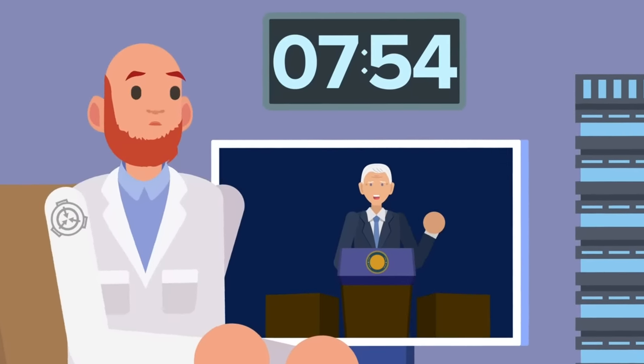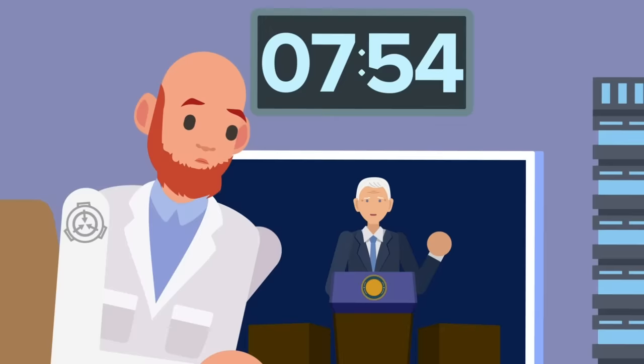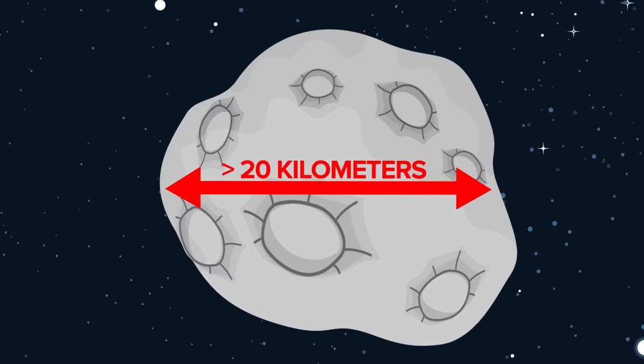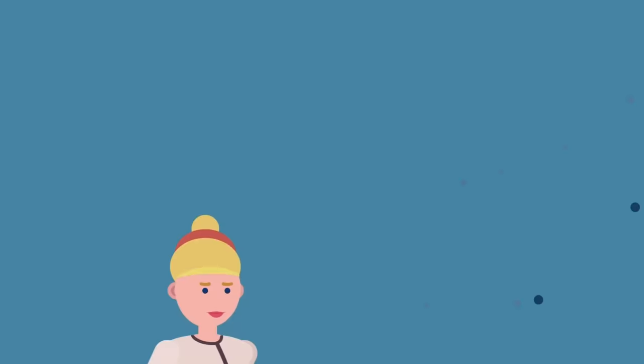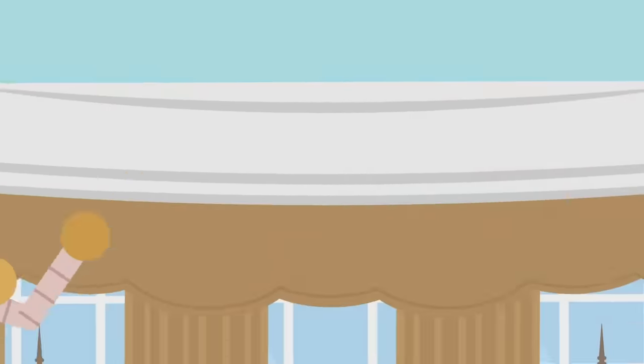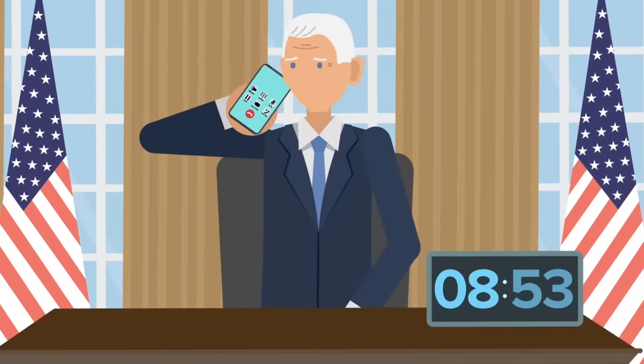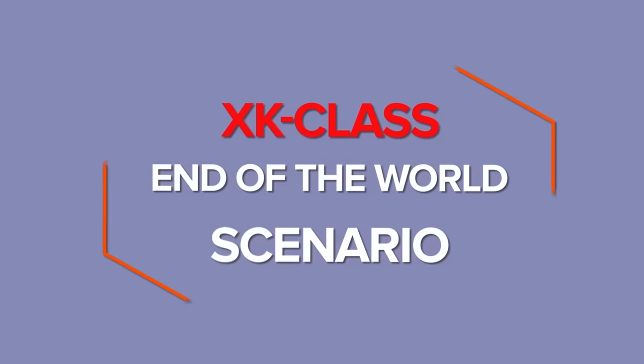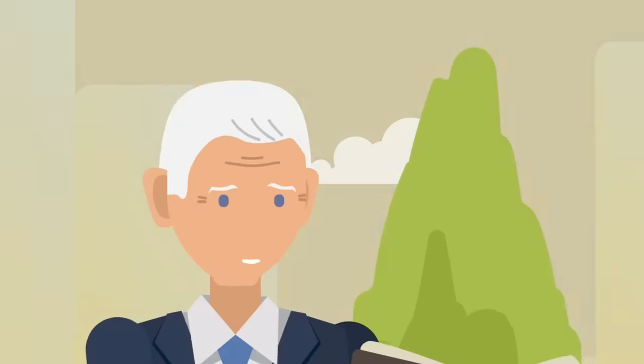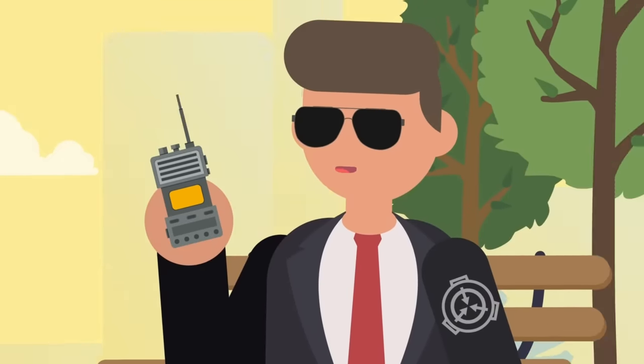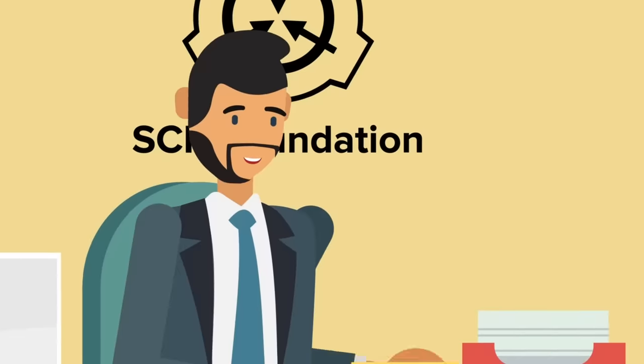If the President doesn't itch, it will cause SCP-5092-1 to spontaneously manifest. 5092-1 is a massive asteroid over 20 kilometers in diameter that manifests above the North Pole and begins hurtling towards Earth at incredible speeds. If the President fails to scratch his nose by 8.53pm every single night, this asteroid will collide with Earth and invariably cause an XK-class end-of-the-world scenario. The Foundation is required to keep a constant watch on the current sitting US President for this exact reason.